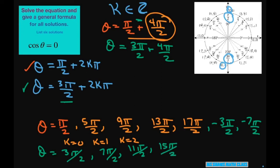If k is negative 1, you could subtract. And that would give you negative π/2. Subtract 4 again, that would be negative 5π/2.